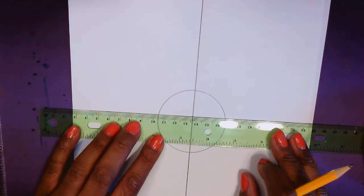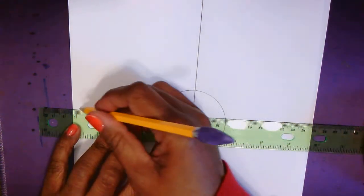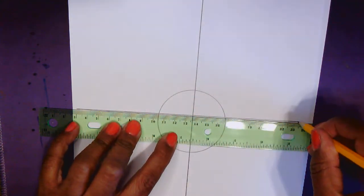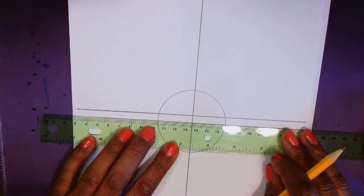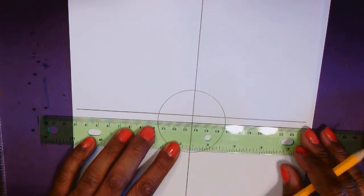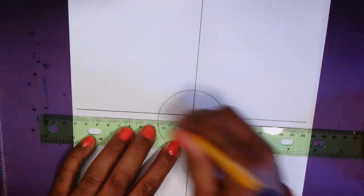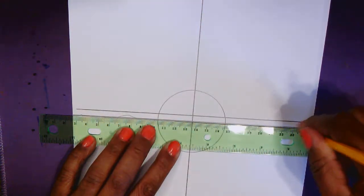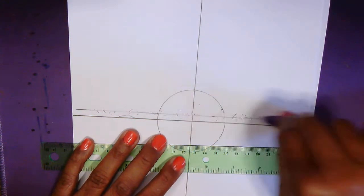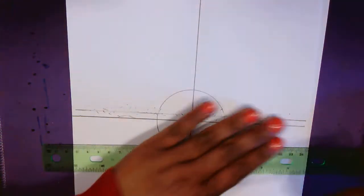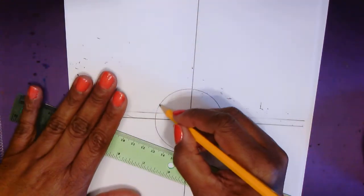Then I want you to do the same thing through the middle in the other direction. So you're making like a T. Actually that line's a little high up, so I'm going to bring it down just a little bit. Good thing we're using a pencil, huh? So I can erase this line.